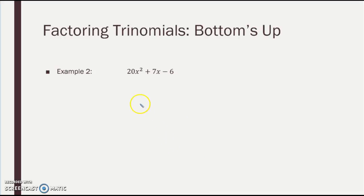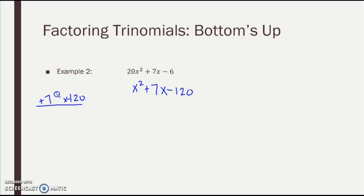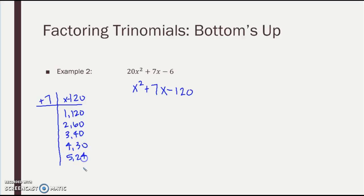Now for Example 2, Bottoms Up. First I multiply A and C: so I've got X squared plus 7X minus 120. I want to find two numbers that multiply to negative 120 but add to 7. Let me list factors: 1 and 120, 2 and 60, 3 and 40, 4 and 30, 5 and 24, 6 and 20, 8 and 15. I'm looking for two that are 7 apart — 8 and 15 are 7 apart. But they have to multiply to negative 120, so one has to be negative. It's got to be the 8, which gives me a positive 7.